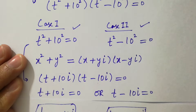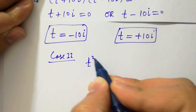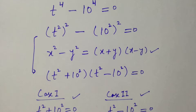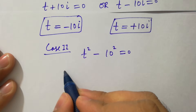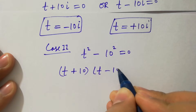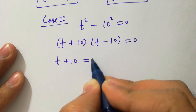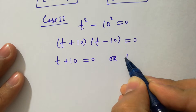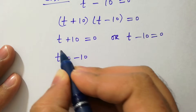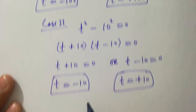Now take the second case: t square minus 10 square equal to 0. As x square minus y square equals x plus y times x minus y, it will be t plus 10 times t minus 10 equal to 0. We have either t plus 10 equal to 0 or t minus 10 equal to 0. We get values of t equal to minus 10 and also t equal to plus 10.